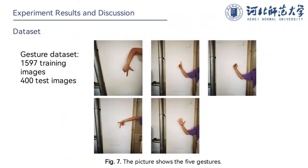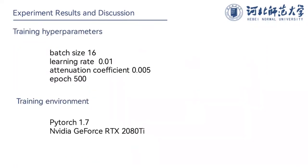The dataset used in this paper is a self-made dataset, including 1,597 training images and 400 test images. The dataset has 5 classes. We only changed several hyperparameters, including batch size, learning rate, attenuation coefficient, and optimization approach, and used the configured hyperparameters to train the model on a computer with GPU.